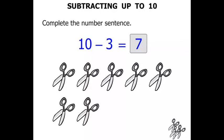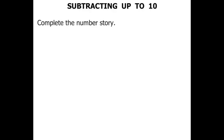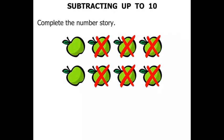Complete the number story. Now we have some apples there, but some of them have been crossed out. And then we have got something take away something leaves something.